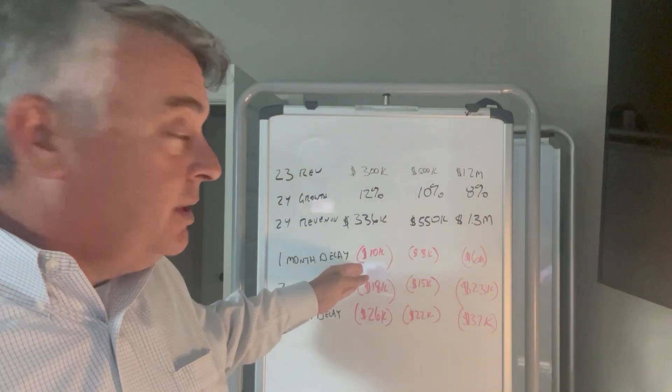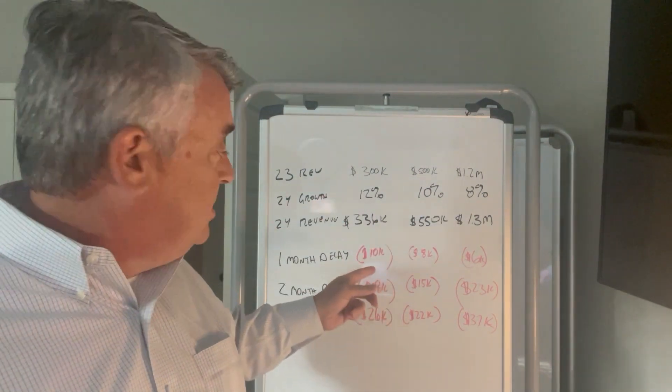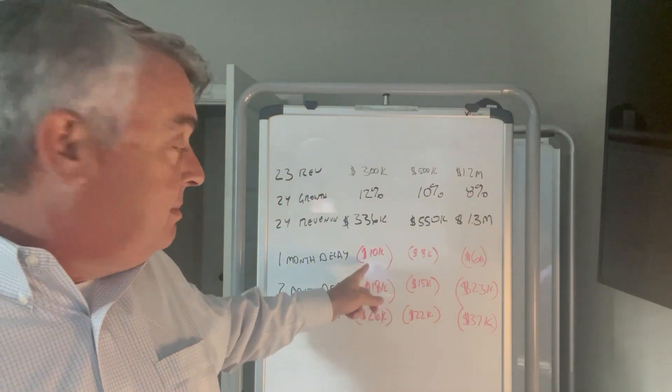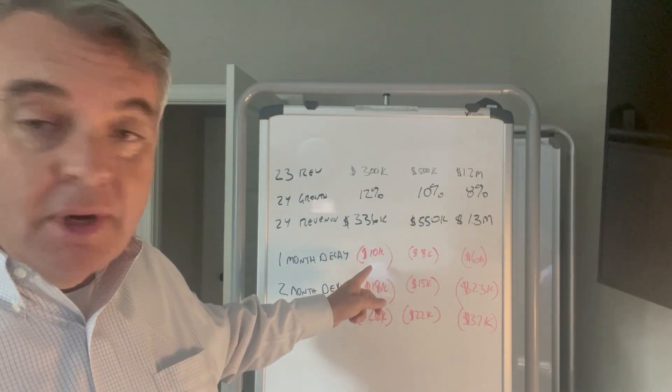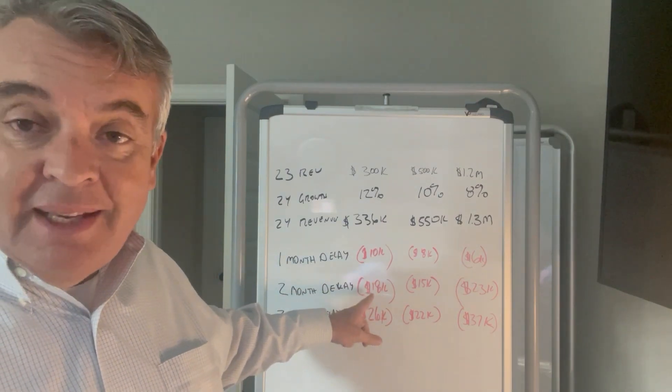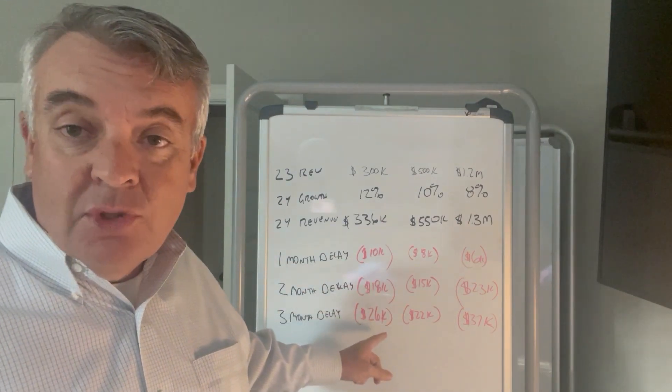If you do a one month delay on a $300,000 business going for 12% growth, you're basically foregoing about $10,000 per month. So month one is $10,000. Actually, it's $9,000. Month two is $18,000. Month three, $26,000.